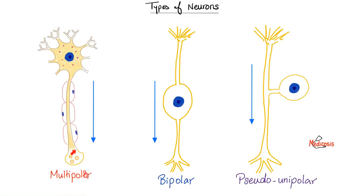Types of neurons: multipolar, bipolar, and pseudounipolar. To identify them, look at the soma and count branches: many branches coming out means multipolar; two branches means bipolar; one branch that appears as two makes it pseudounipolar.